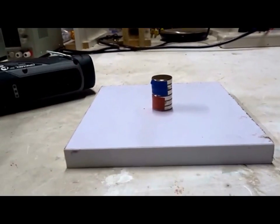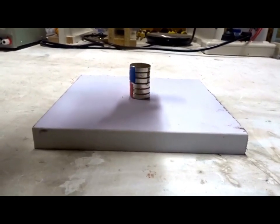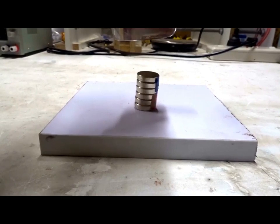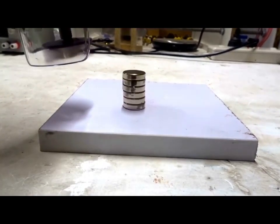The blue south pole pointing up, over the center of the magnet, it spins clockwise. And then around the outside of the magnet, the spinning magnet spins the other way.